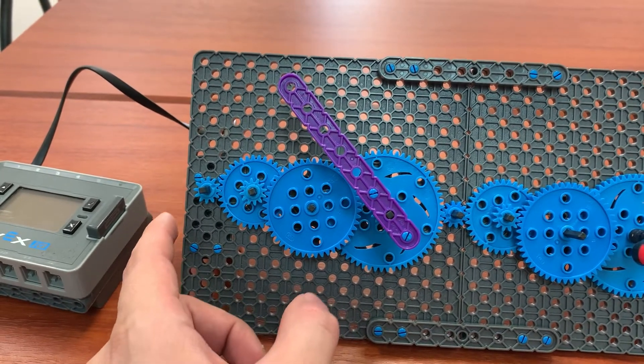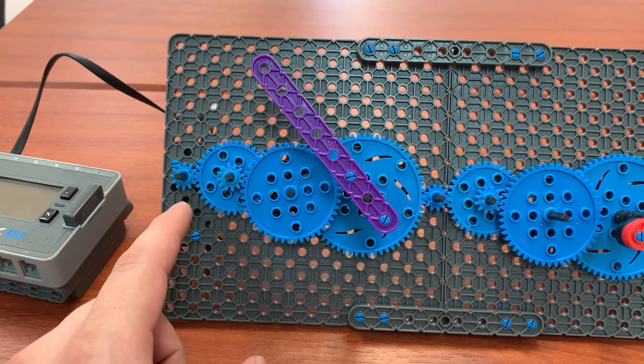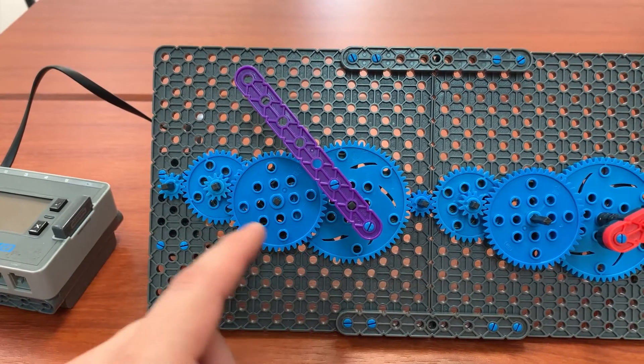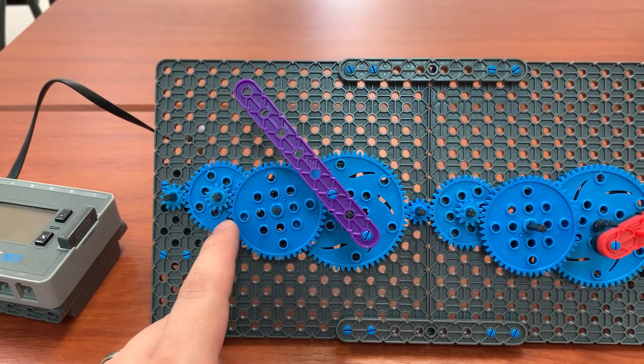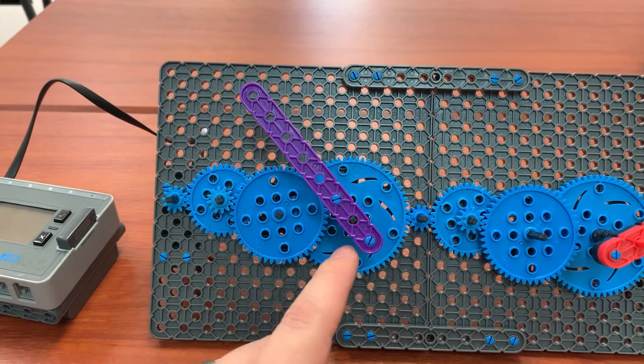So in VEX IQ we have five different sizes of gears. We have a 12-tooth gear, a 24-tooth gear that's not part of this drivetrain, a 36-tooth gear, a 48, and a 60. And of course those are all multiples of 12.